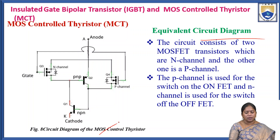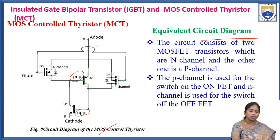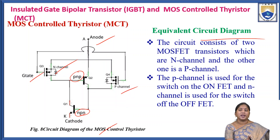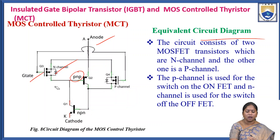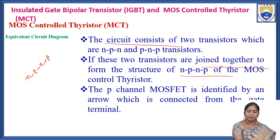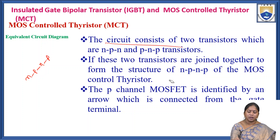The equivalent circuit diagram shown in figure 8 consists of NPN transistor Q1, PNP transistor Q2, anode, gate, P-channel MOSFET, and N-channel MOSFET. The P-channel MOSFET is the turn-on FET and the N-channel MOSFET is the turn-off FET. When the two transistors are joined together, they form the N-P-N-P structure of the MOS-controlled thyristor.